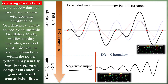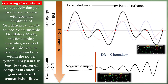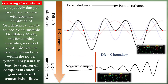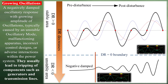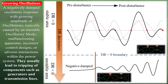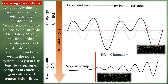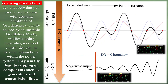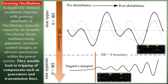Growing oscillations: a negatively damped oscillatory response with growing amplitude of oscillations, typically caused by an unstable oscillatory mode, malfunctioning apparatus, incorrect control designs, or adverse interactions within the power system. They usually lead to tripping of components such as generators and transmission lines.